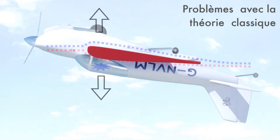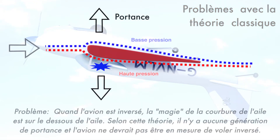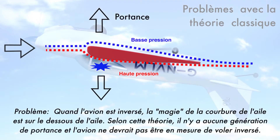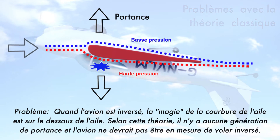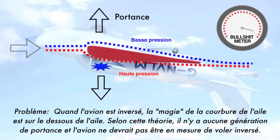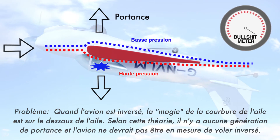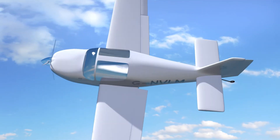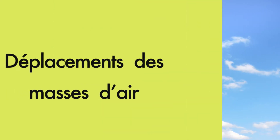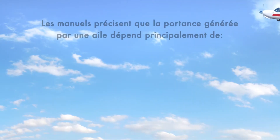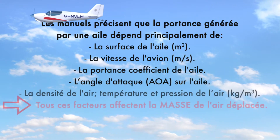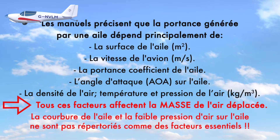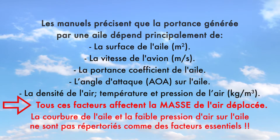For now, let's just focus on one of these many problems. This conventional theory cannot explain how planes can fly inverted. When the plane is inverted, the curvature of the wing is now facing downwards, not up. So the wing should pull the plane towards the ground according to this theory. The critical factors that influence vertical lift on a wing do not include low air pressure on the top of the wing.